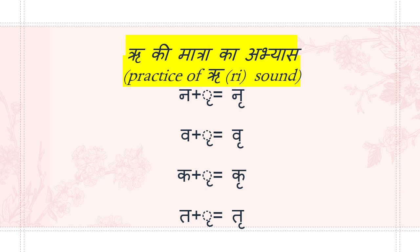Chapter 7 is about the practice of the Ri Matra. Let's add this Ri Matra to other consonants to understand the sound of the letter when you add it. So Na plus Ri Matra becomes Nri; Va plus Ri Matra becomes Vri; Ka plus Ri Matra becomes Kri; Ta plus Ri Matra becomes Tri. You have to properly understand the Ri sound and how to write and join the Matra to consonants to get the appropriate sound.